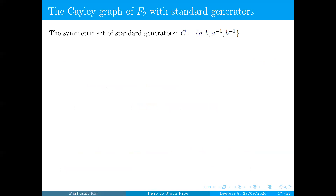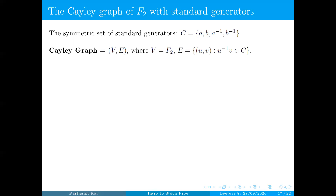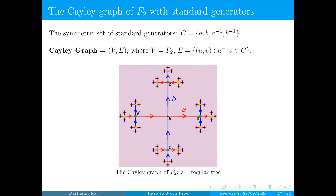Now this group has something called a Cayley graph, which I'm going to describe now. Note that the standard set of generators for F2 is A, B, and if you include inverses, then A, B, A inverse, and B inverse. Any element of the group can be generated from this set — this is called a standard set of generators for the free group of rank two. A Cayley graph is a graph where the vertices are just the set of all possible reduced words, namely F2, and we join U with V provided U inverse V is in the generating set S — so U inverse V is either A, B, A inverse, or B inverse.